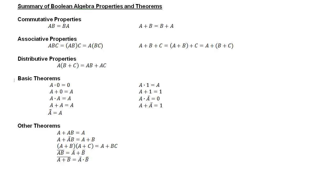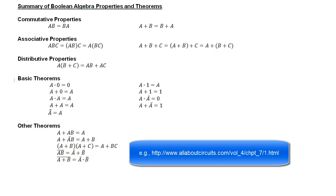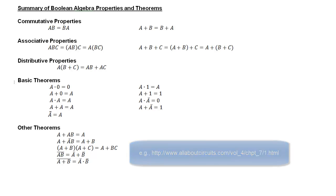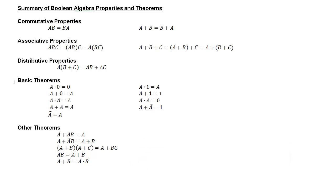If you haven't seen these properties and theorems before, I suggest that you find a resource to read up about them, and just familiarize yourself with the basic theorems and basic properties, because we're going to be using them as we do the Boolean algebra simplification. If you'd like, take a screenshot of these properties and theorems so that you have it beside you as you watch this video.